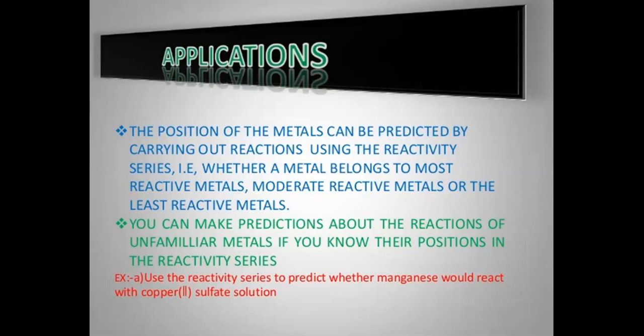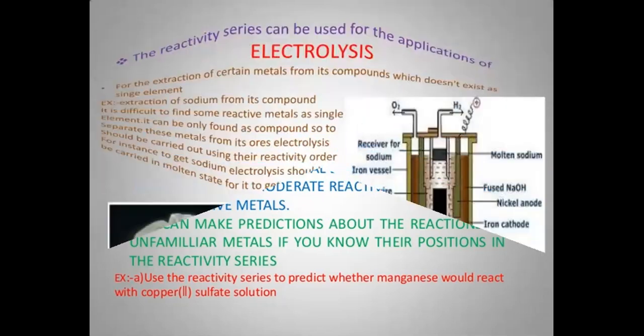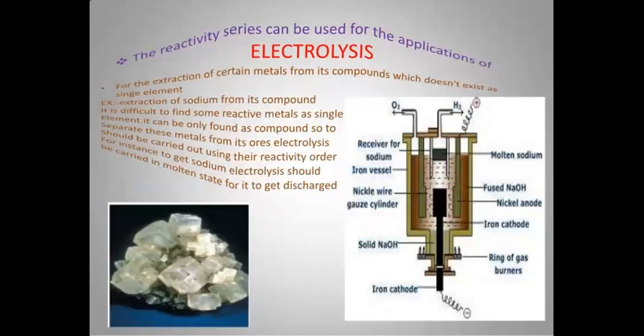That is, whether a metal belongs to the most reactive, moderately reactive, or least reactive group, we can make predictions about the reactions of unfamiliar metals if we know their position in the reactivity series. For example, accomplishing a displacement reaction is possible if we know the order of the metal present in the reactivity series. The reactivity series can also be used for the application of electrolysis — the process for the extraction of certain metals from compounds by passing electricity through a molten solution.